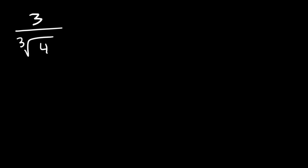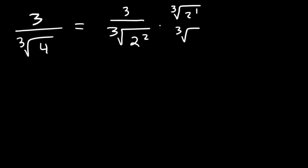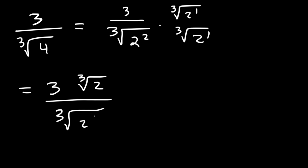Try this one: 3 divided by the cube root of 4. Notice we can simplify the bottom first — 4 can be written as 2 squared, so we only need one more 2 to reach the cube root of 8. Multiply the top and the bottom by the cube root of 2 to the first power. On top we get 3 times the cube root of 2. On the bottom we have the cube root of 2 to the third power, which is just 2. So the final answer is 3·∛2 divided by 2.